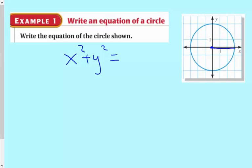So r is 3, 1, 2, 3. So equals 9, 3 squared. That's all you've got to do.